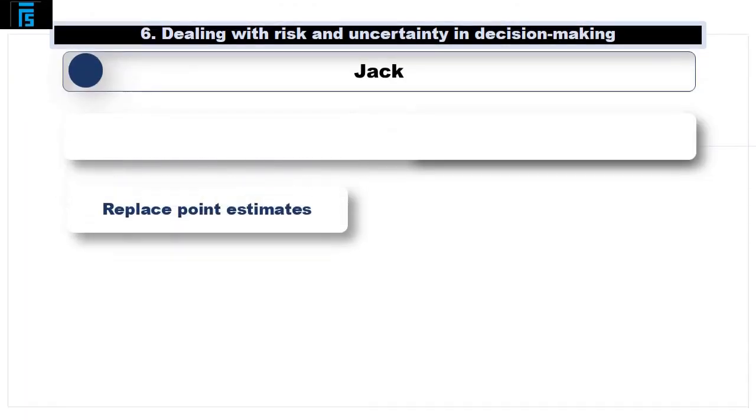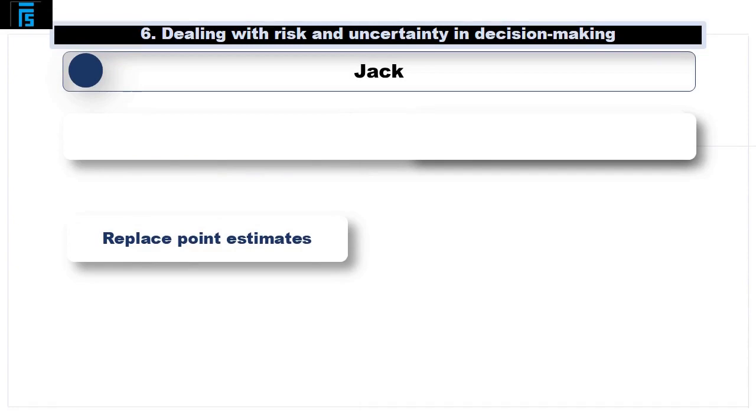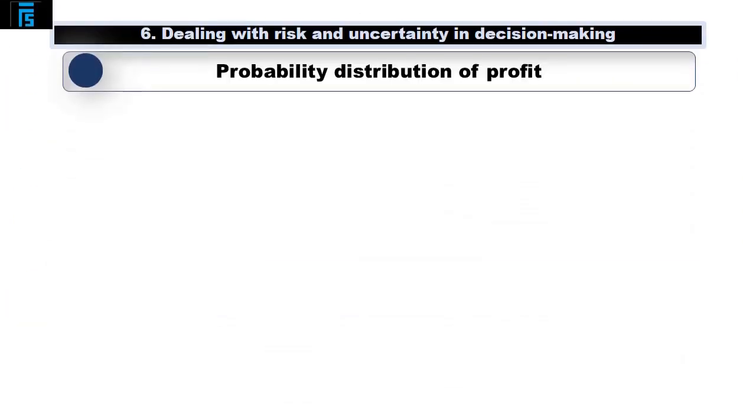Getting back to Jack. He could replace one or more of the point estimates with probability distributions, many of which may be normal distributions like we have considered.